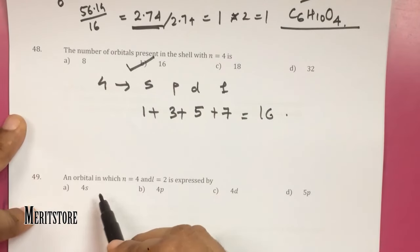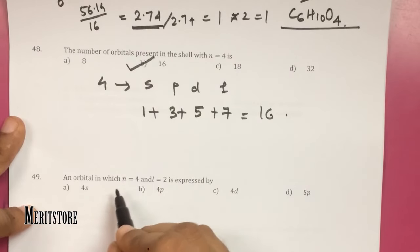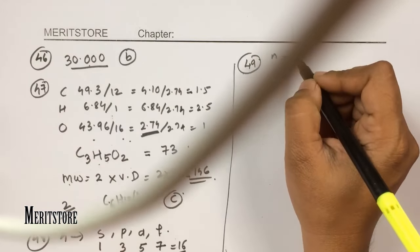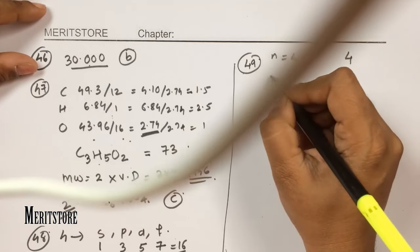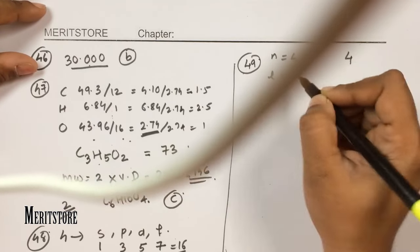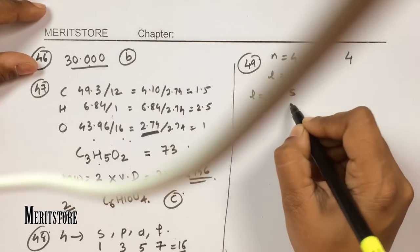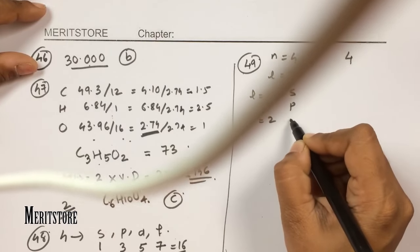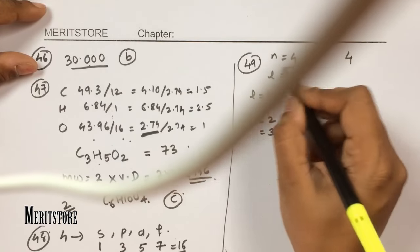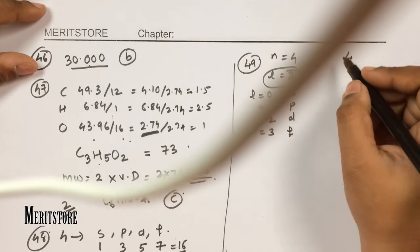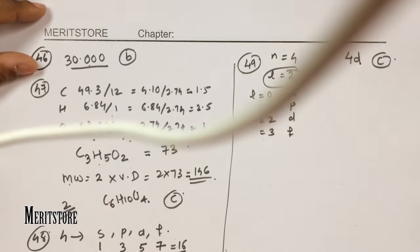Question 49: an orbital where n = 4 and l = 2. Since n = 4, the shell number is 4. The l values are: 0 for s, 1 for p, 2 for d, and 3 for f orbital. Since the given value of l is 2, it represents the 4d orbital, which is option C.